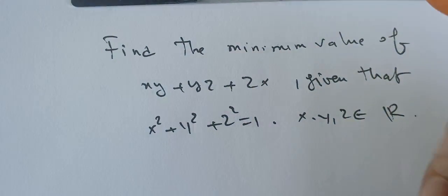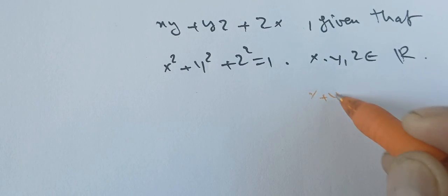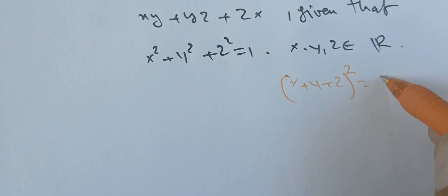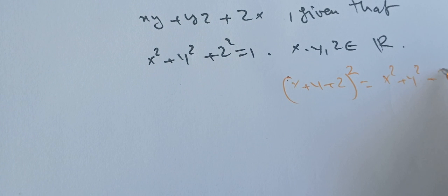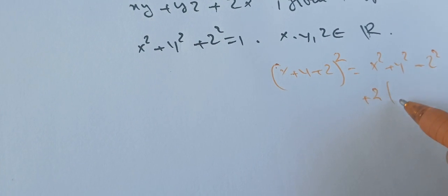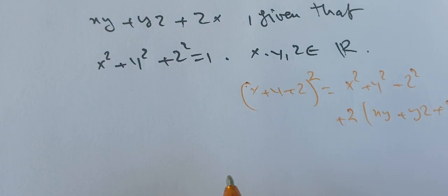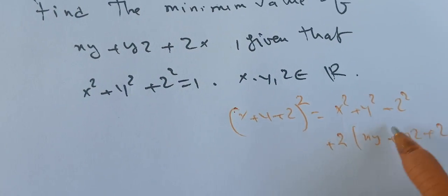Remember that if you have x+y+z and you square everything, you're going to get x²+y²+z²+2(xy+yz+zx). So here we need to notice something.